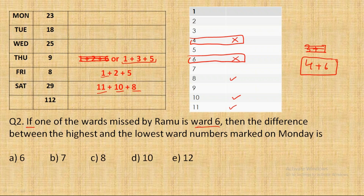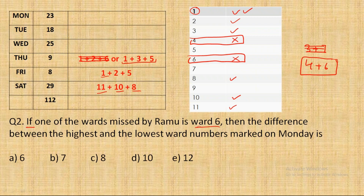Filling in confirmed visits: ward 11 gets one tick (used Saturday), ward 10 gets one tick, ward 8 gets one tick. Ward 1 gets two ticks — it was used on both Friday (1+2+5) and Thursday — so ward 1 is now packed up, fully visited. Similarly, wards 2, 3, and 5: ward 5 gets its second tick from Friday and Thursday, so ward 5 is also packed up.